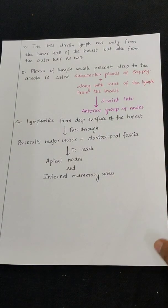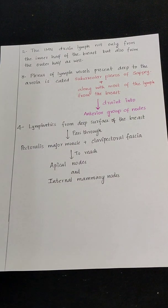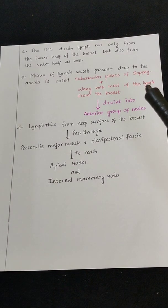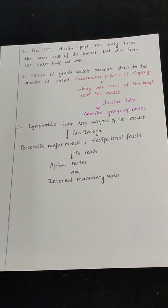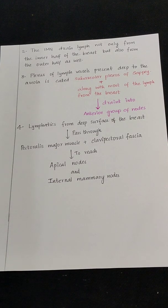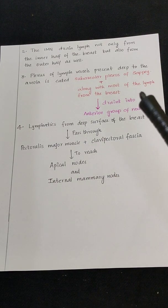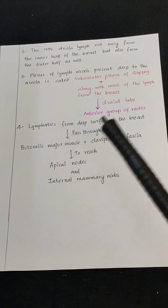The internal mammary nodes drain lymph not only from the inner half of the breast but also from the outer half as well. The plexus of lymph vessels present deep to the areola is called the subareolar plexus of Sappey. This subareolar plexus of Sappey, along with most of the lymph from the breast, drains into the anterior group of axillary lymph nodes.